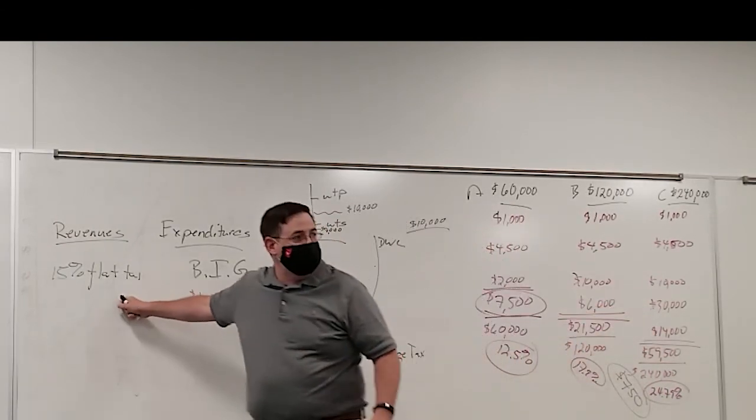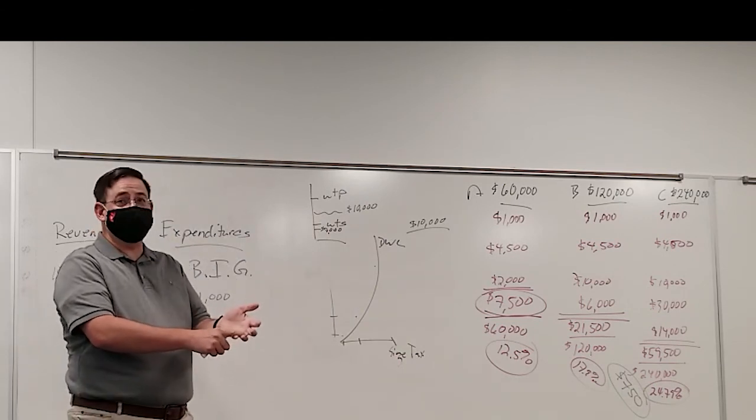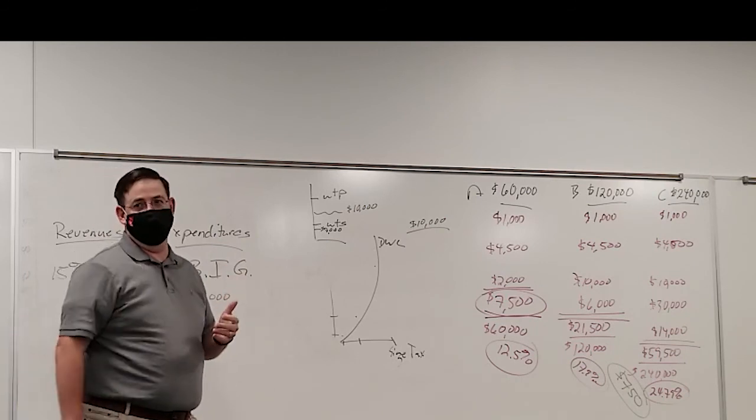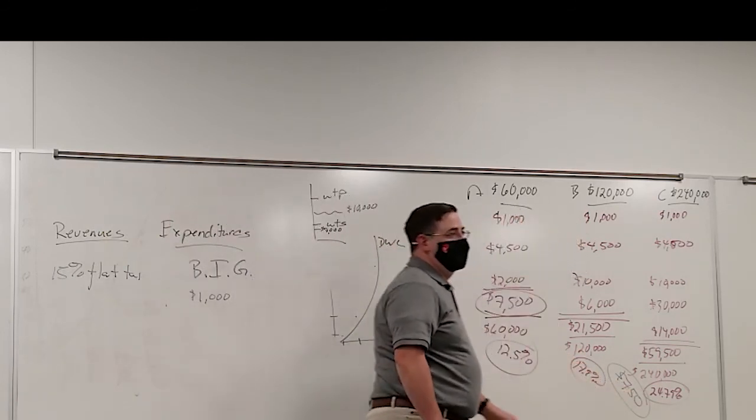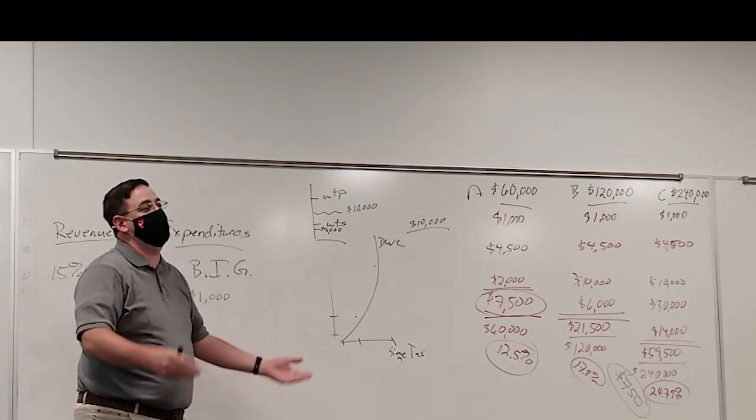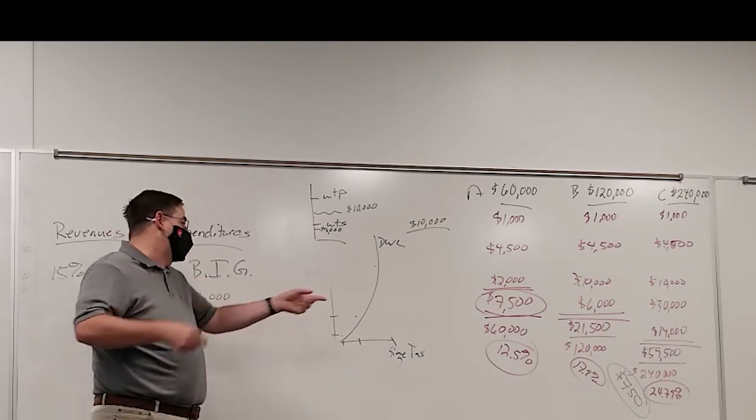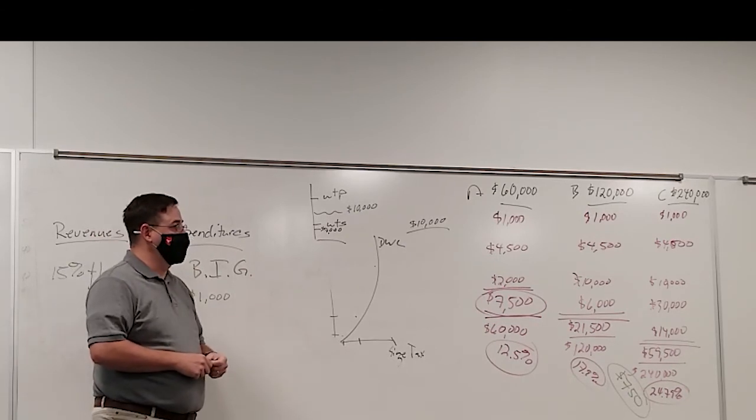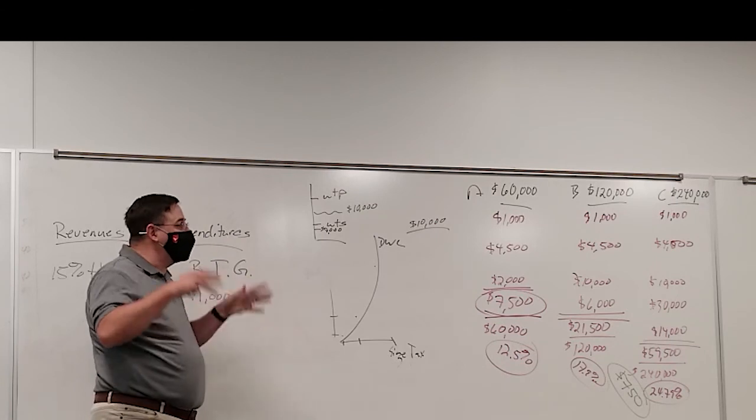But the flat tax says no loopholes, buddy. Mortgage interest rate deduction? No. Gone. Out the door. No deductions. Everybody pays 15%. No loopholes. A lot of unemployed accountants. They can do something else. They can go make something useful in the world. Instead, all they're doing is trying to play with numbers. I mean, it's creating value for the people that they serve. But in terms of actually creating something in the world, not so much. I love accountants. I hire my accountant every year to do my taxes.